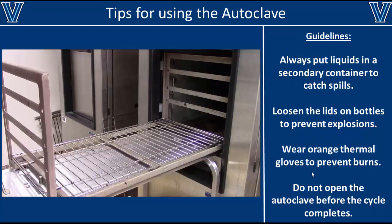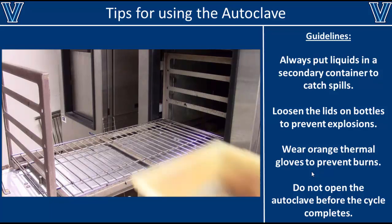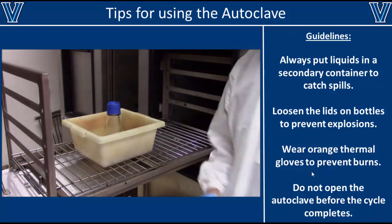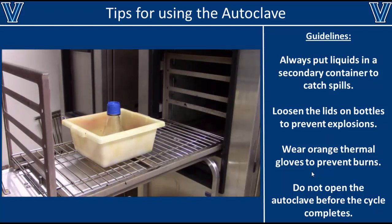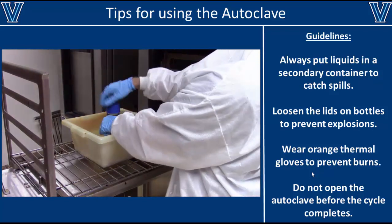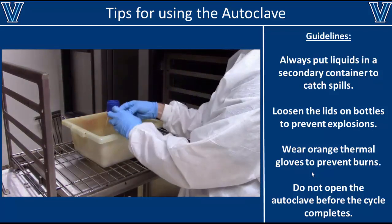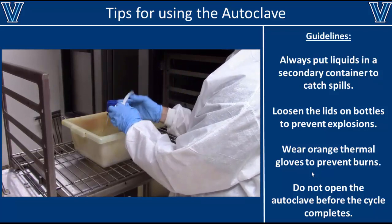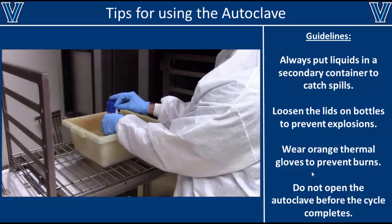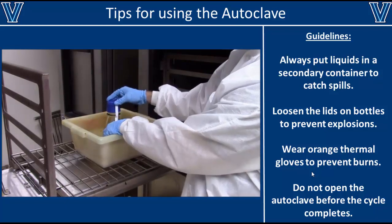If your experiments include cells, you'll have to sterilize media and other reagents before you start your experiments, and to do so we typically use an autoclave. Autoclaves use high temperature and pressure steam to sterilize things, so they have their own inherent hazards. Always put any liquids you're sterilizing in a secondary container, just in case they spill out — this happens often and creates a huge mess. You should also loosen the lid on the container but do not remove it completely, to avoid any pressure buildup inside the vessel as it heats up. Apply a small piece of tape to keep the lid in place.